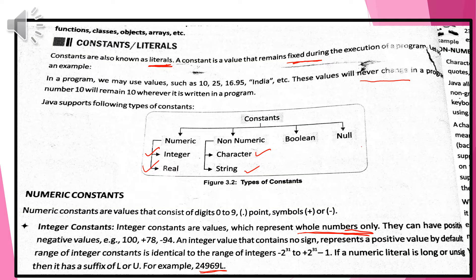Let us discuss the constant or literals. We already discussed the data and the data bearing certain value. The value needs to be changed inside the program. But when there is a case or condition where the value always remains fixed, that is called a constant during the whole execution of the program. It will never change.